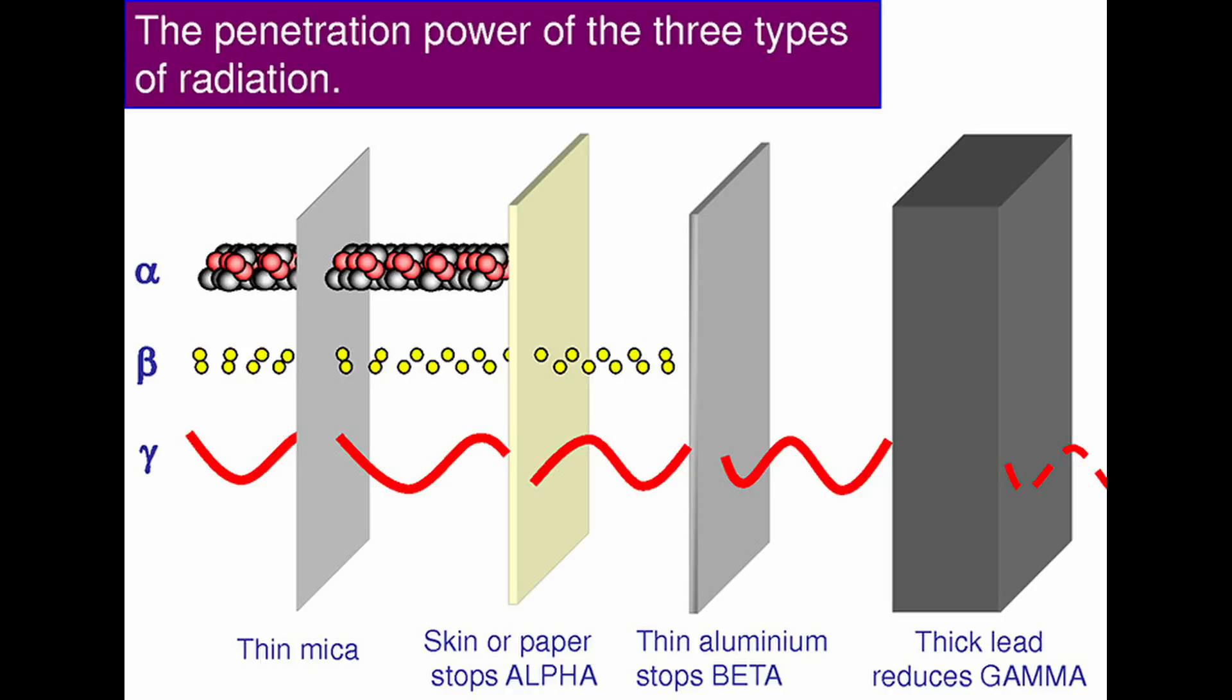Gamma particles are the strongest and most penetrating of the three particles. Thick lead is needed just to reduce gamma particles. Gamma and beta particles are dangerous inside and outside of the body, due to their high penetrating power.